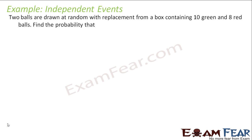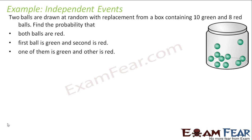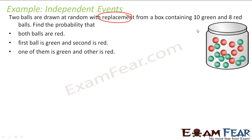The next question: 2 balls are drawn at random with replacement from a box containing 10 green and 8 red balls. Find the probability that both are red, the first ball is green and the second is red, and one of them is green and the other is red. Please note it is with replacement, so they are independent events. When you take out a ball and replace it back, then take out another ball, these are independent events.